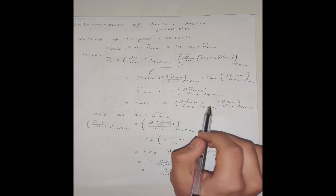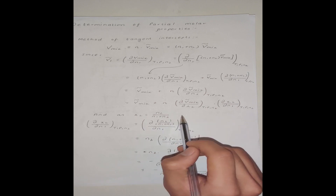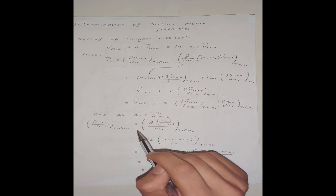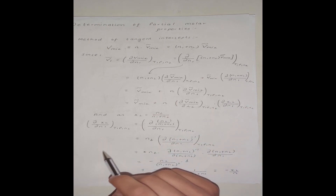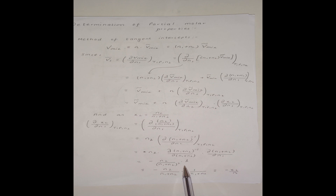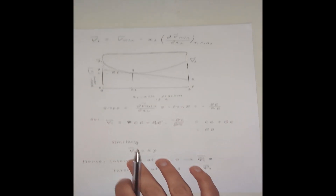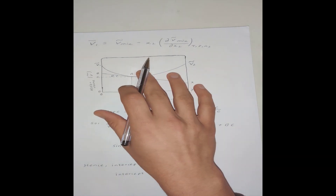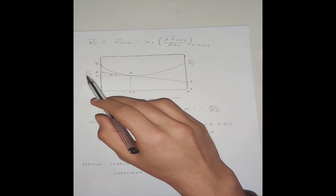Next I use the chain rule of the derivative by multiplying and dividing by the mole fraction of species 2. Since the mole fraction x₂ is defined as n₂ divided by the total number of moles, I substitute x₂ and evaluate the partial derivative. After doing some basic derivative analysis, I end up with the value of this partial derivative being −x₂/n. Substituting this value into the expression gives me the partial molar volume of component 1 in terms of the molar volume and its derivative.